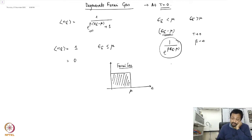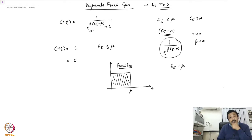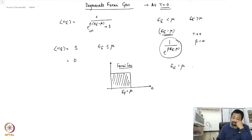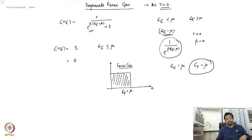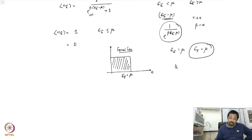All energy levels up to epsilon_k equal to mu are completely filled at T equal to 0, and therefore at T equal to 0 the Fermi energy equals the chemical potential of the system. Since we are looking at an ideal gas where epsilon_k equals h-bar squared k squared over 2m, we can define a Fermi wave vector.